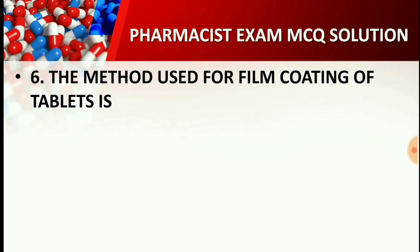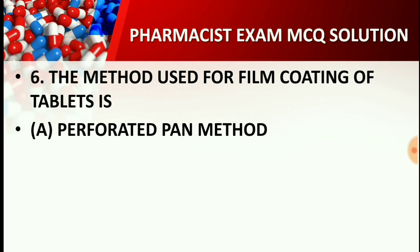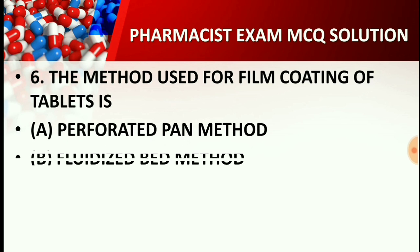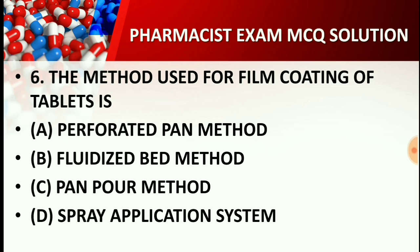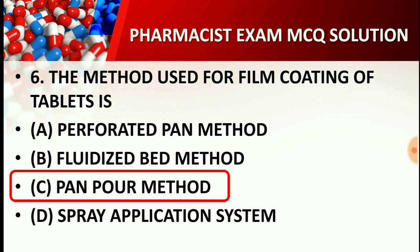Question number six: The method used for film coating of a tablet is — Option A: Perforated pan method, Option B: Fluidized bed method, Option C: Pan pore method, Option D: Spray application system. The right answer is Option C: Pan pore method. The Pan pore method is used for film coating of tablets.